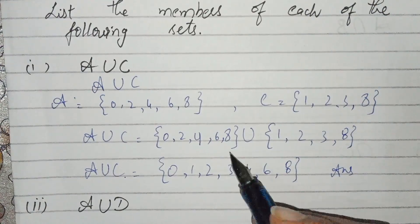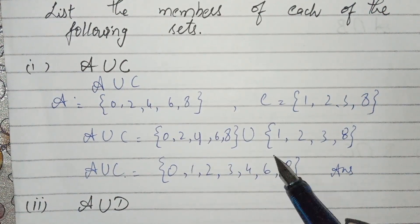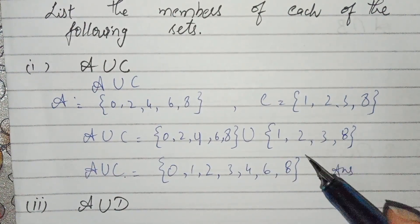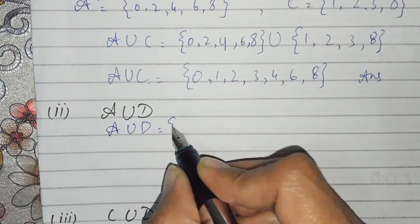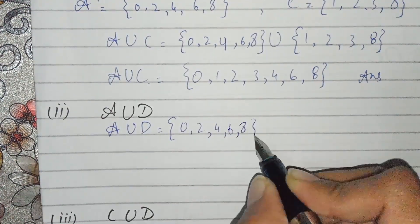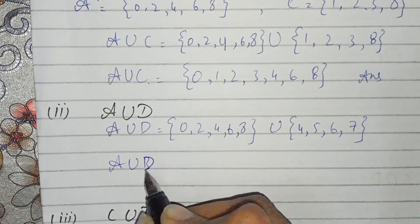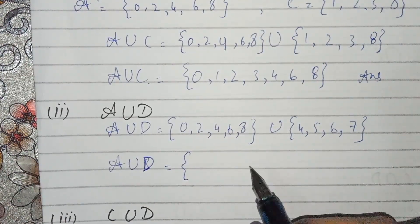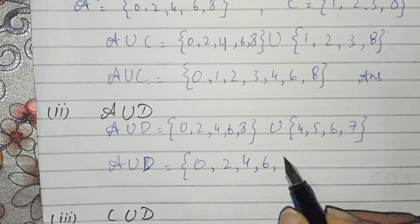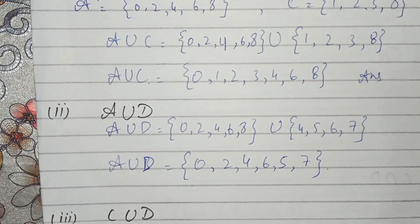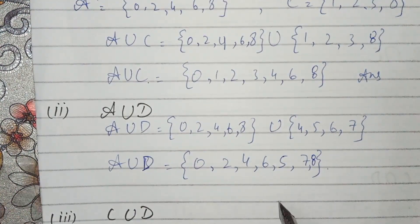Part number one is solved. We combine all elements and do not repeat elements in the union set. There is no 7 in either side, so I am not writing 7. Now A union D: A is {0,2,4,6,8} and D is {4,5,6,7}. Combining them we get {0,2,4,5,6,7,8}. This is A union D.